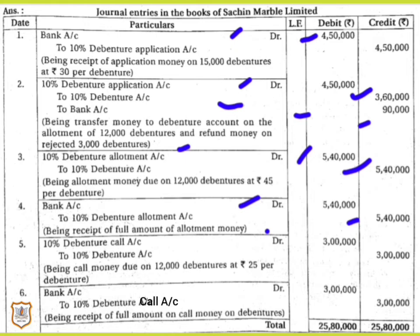When the call is made: 10% Debenture Call Account is debited with the money due on the call — 12,000 debentures × rupees 25, which comes to rupees 3,00,000. When the company receives this amount it will be transferred to 10% Debenture Account, so Debenture Account is credited by rupees 3,00,000.